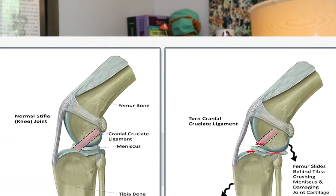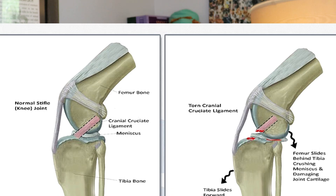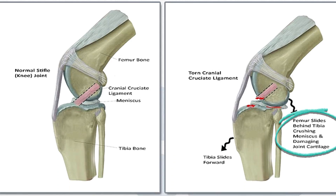The other important thing to know about is that in the stifle we have a meniscus, and it forms a bit of a cushion for when the femur is weight-bearing onto the tibia. It also helps with position sensing and it can be damaged if the cranial cruciate ligament is damaged.